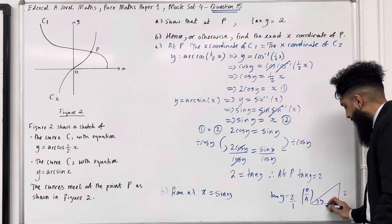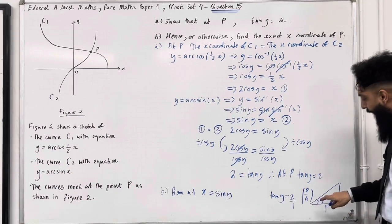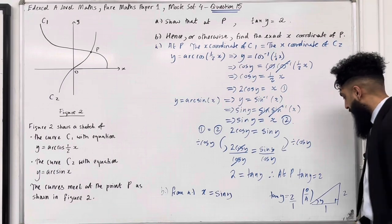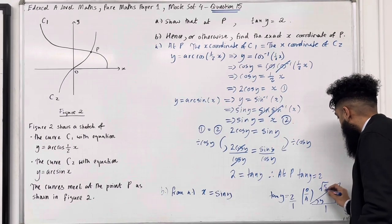We can find the hypotenuse of this right-angled triangle using Pythagoras' theorem. So the hypotenuse is √5.